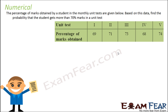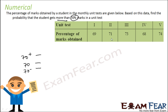Let us take one more scenario. The percentage of marks obtained by a student in the monthly tests are given. We have to find the probability that the student got more than 70% marks. So there are 3 sample spaces: more than 70%, exactly 70%, and less than 70%. More than 70% occurs 3 times, exactly 70% occurs 0 times, and less than 70% occurs 2 times.